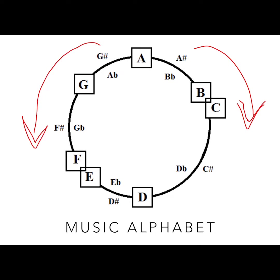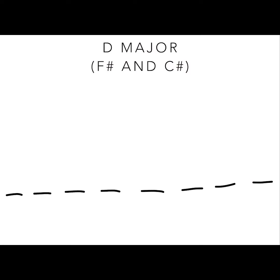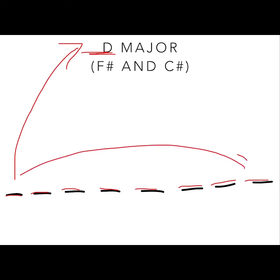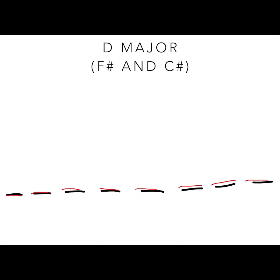Let's go ahead and actually work on a scale. We're going to pick the D major scale because that's the most common. We know that D major has two sharps: F sharp and C sharp. Now we're going to know why. We have dashes to symbolize the eight notes required in a scale, and because we are in the key of D major, the first note and last note are going to be D.